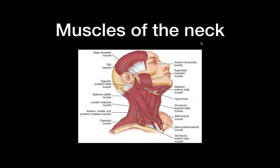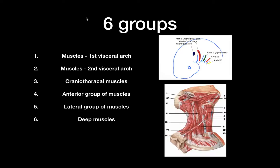In this video, I'm going to talk about the muscles of the neck. The muscles of the neck are divided into groups according to their development. The first group is the muscles derived from the first visceral arch, the second from the second visceral arch, and the third is the cranio-thoracic muscle that connects the cranium to the thoracic part. Then you have the anterior group, the lateral group, and the deep muscles which lie inside the neck and connect to the vertebrae.